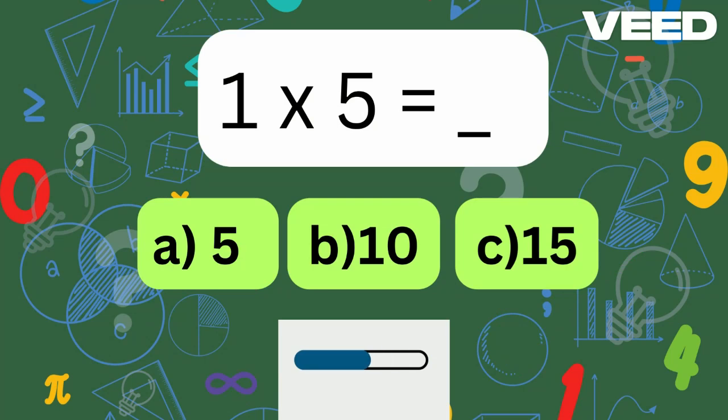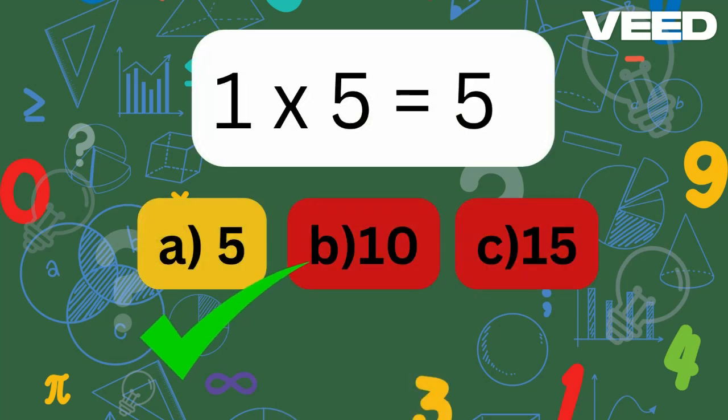1 times 5 is? Of course, 1 times 5 is 5.